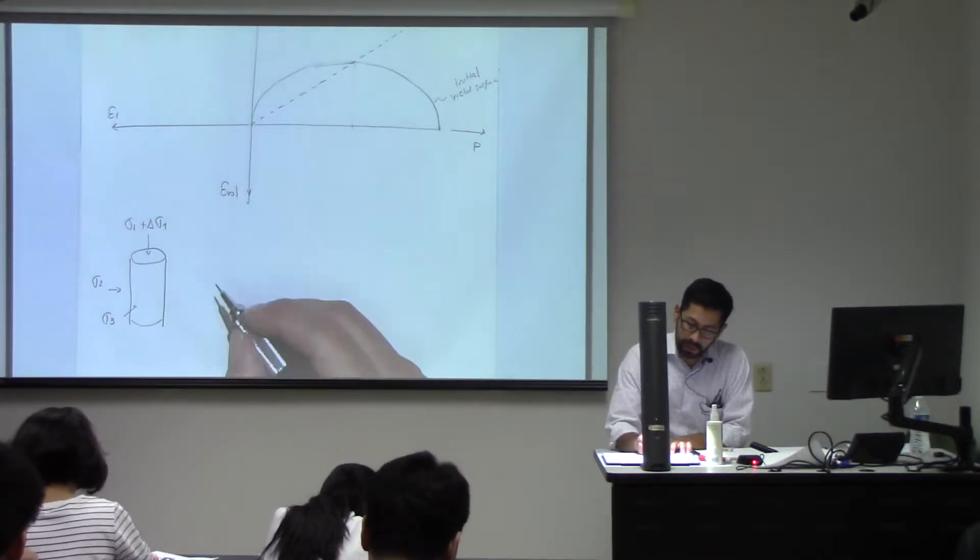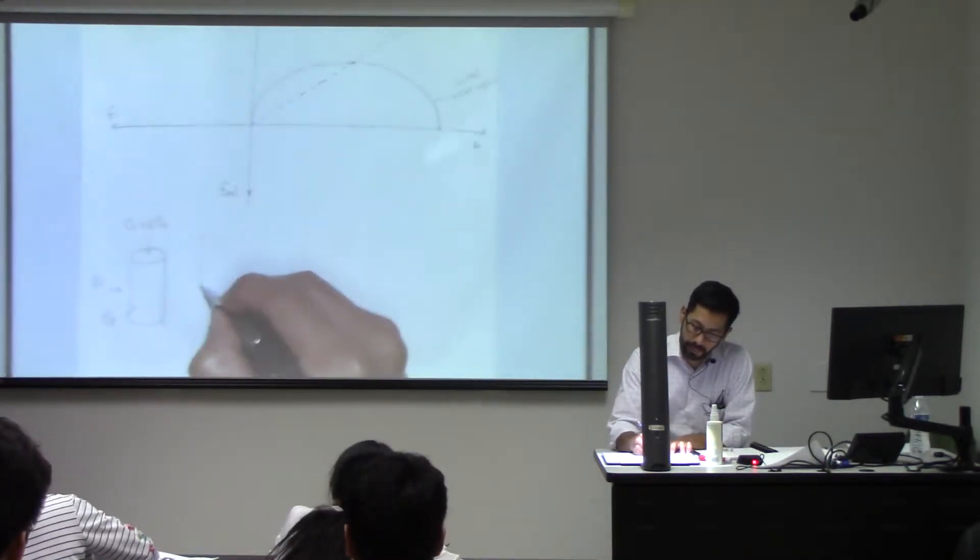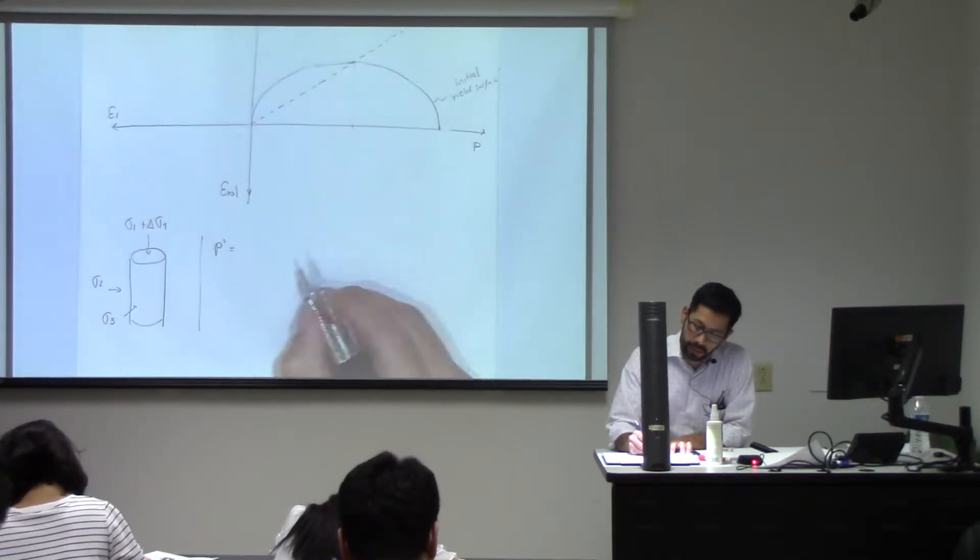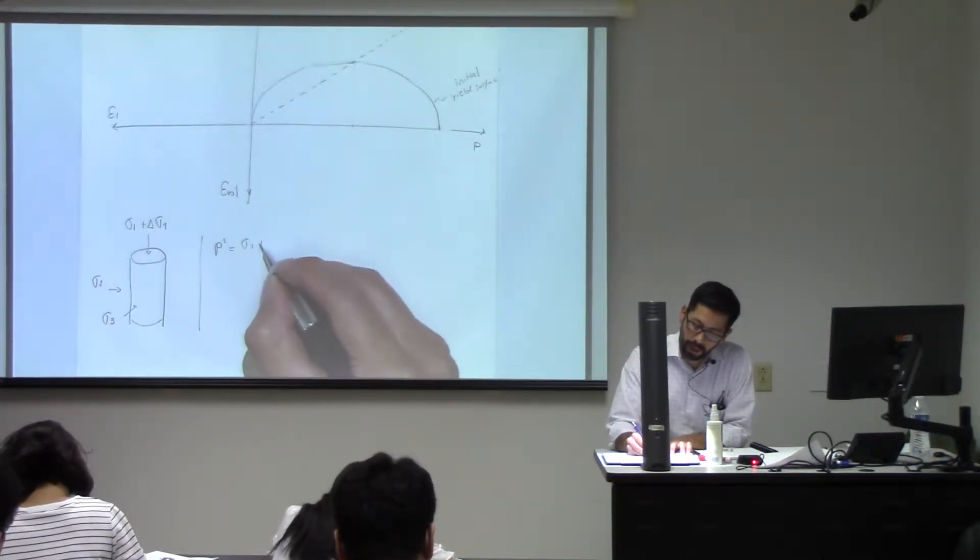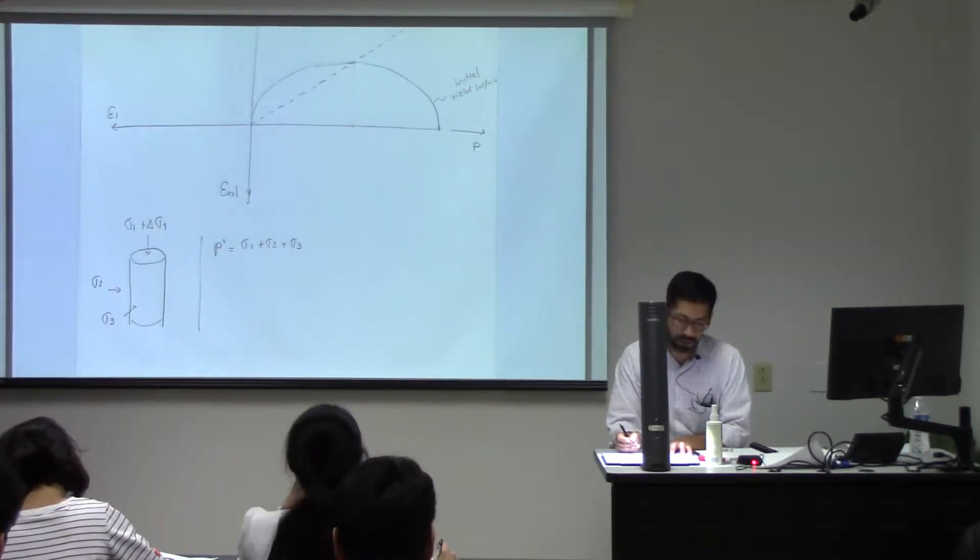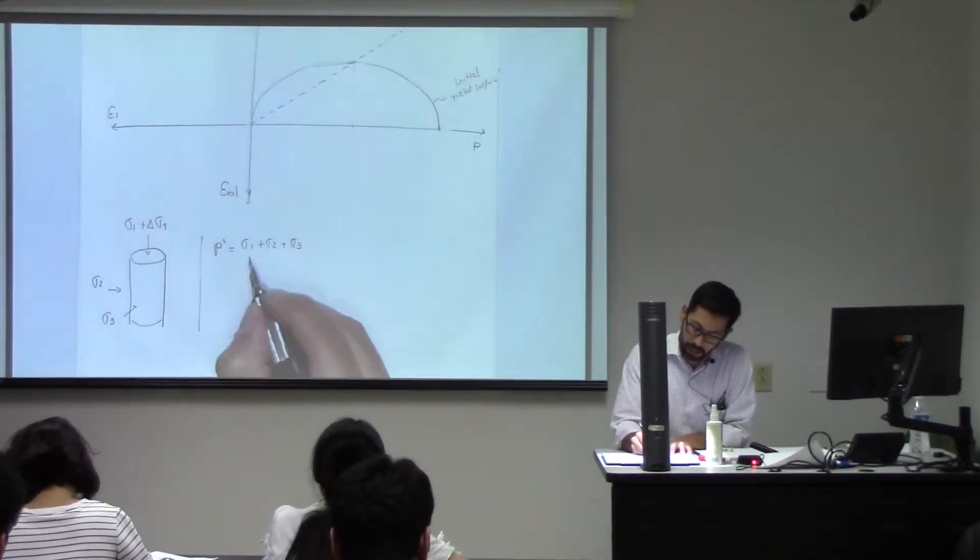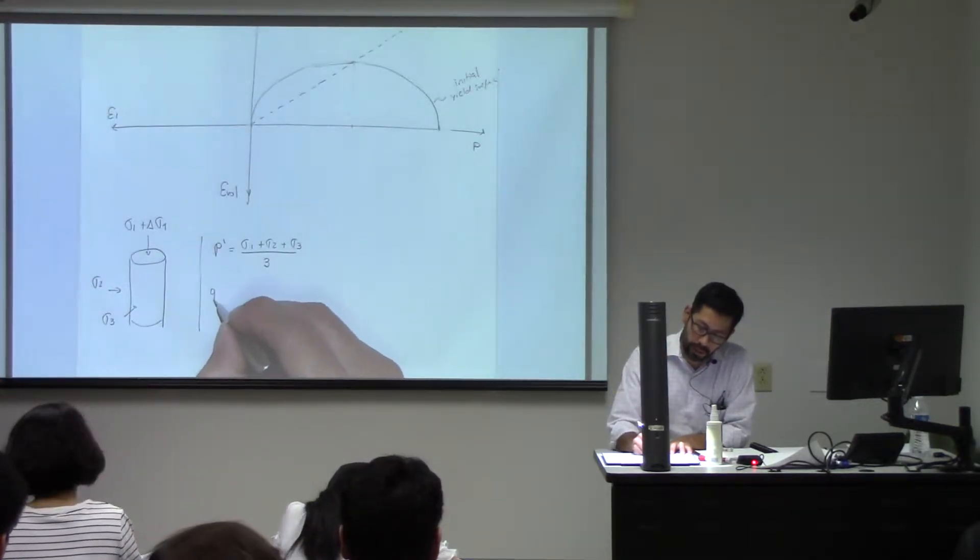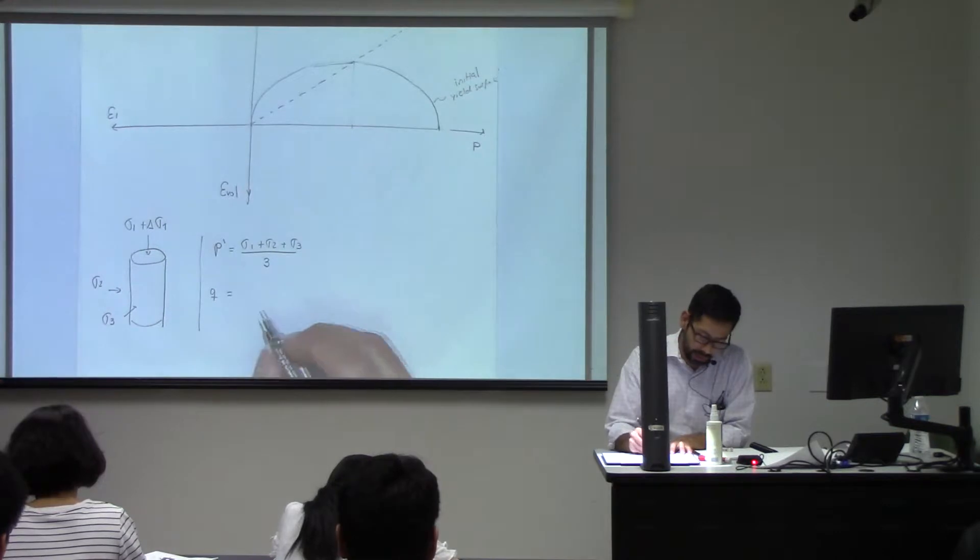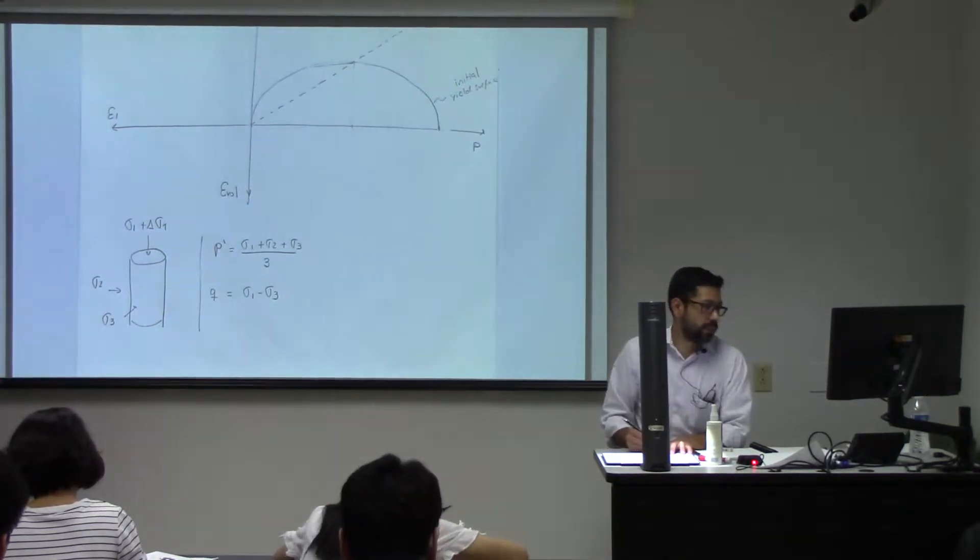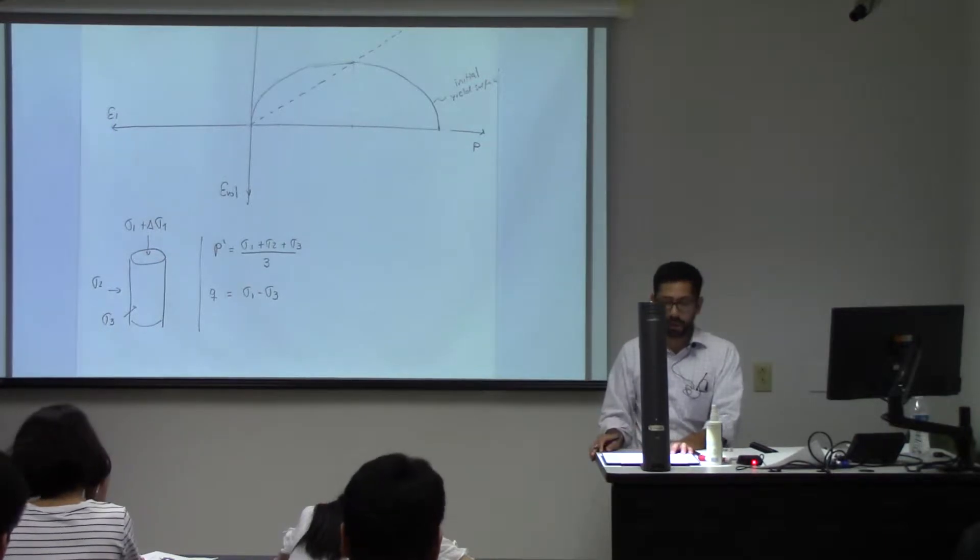So in such a triaxial test, the mean stress is going to be sigma one plus sigma two plus sigma three, always I'm talking about effective stresses, divided by three. And Q is going to be equal to sigma one minus sigma three, the deviatoric stress.